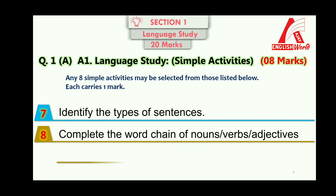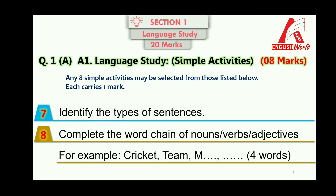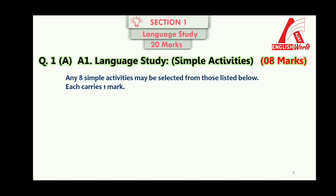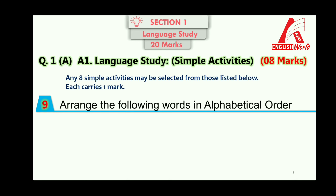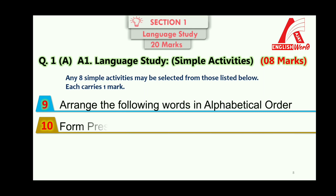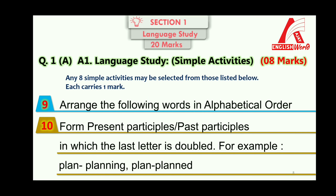Other A1 activities include: identify the type of sentences; complete the verb chain of nouns, verbs, or adjectives — for example, starting with 'cricket' (ending in T), the next word starts with T, such as 'team', then the next starts with M, and so on, with at least four words expected; arrange words in alphabetical order; and form present participle and past participle in which the last letter is doubled — for example, plan → planning.